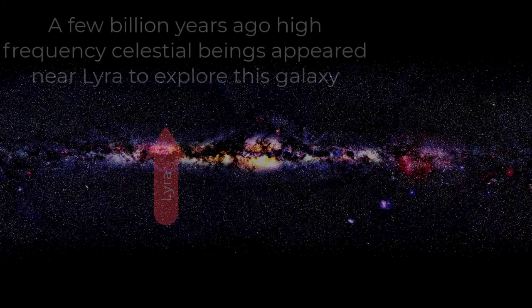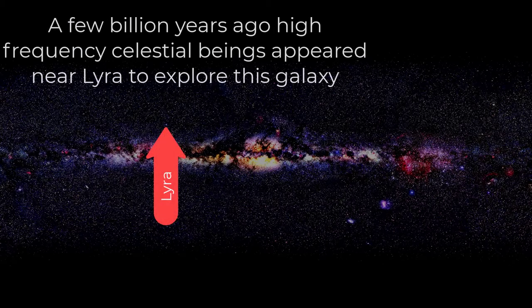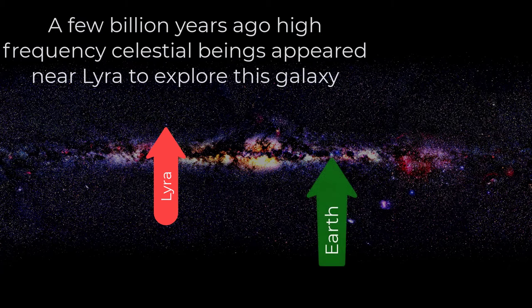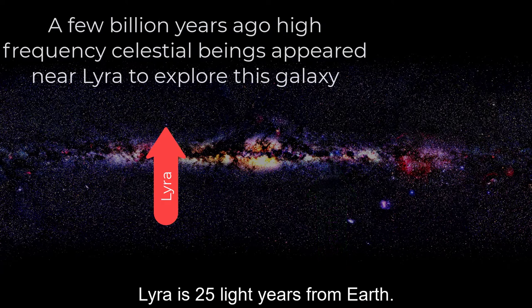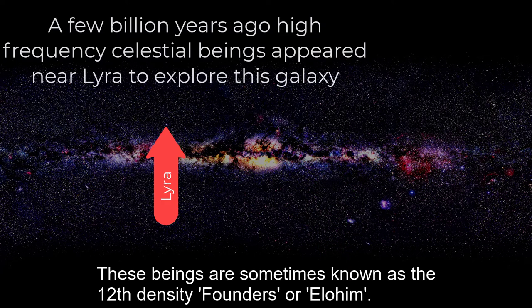A few billion years ago, high frequency celestial beings appeared near Lyra to explore this galaxy. Lyra is 25 light-years from Earth. These beings are sometimes known as 12th density founders, or Elohim.